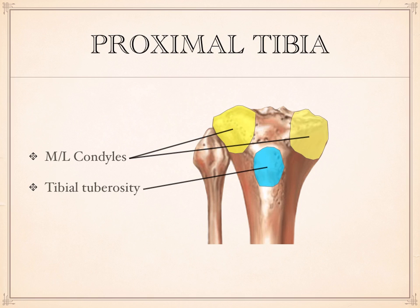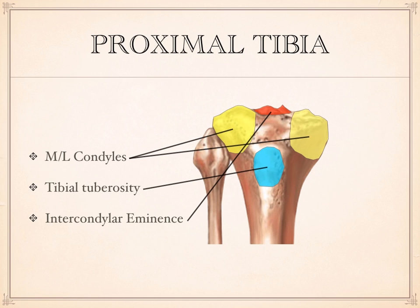Up between the two condyles there's a little double hump or double-mountain-like structure, referred to as the intercondylar eminence. An eminence is something that is raised, and intercondylar gives you the location — between the two condyles. It sticks up between the two condyles of the femur and is an important attachment site for ligaments that stabilize the knee.